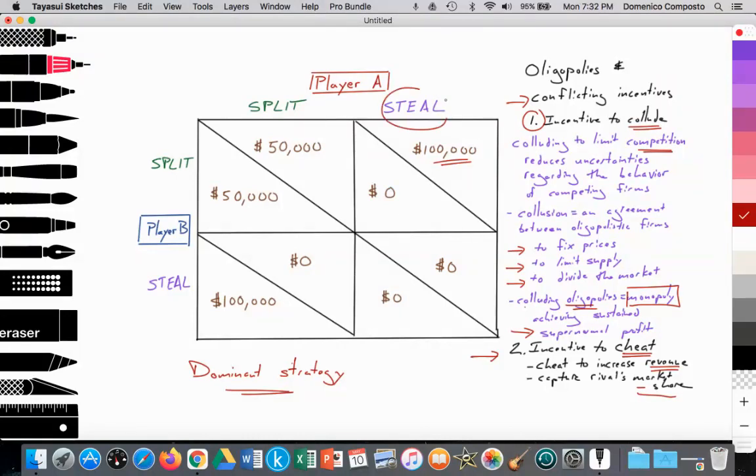As players play this game over and over again, and as they lose trust in each other, whenever they have decided to split and one player steals, they will lose that faith and no matter what, they will steal and steal. And they will end up in the lower right box, which we can consider the Nash equilibrium.